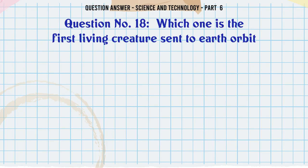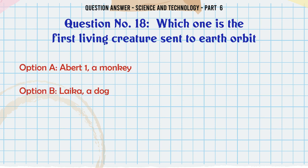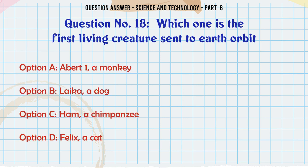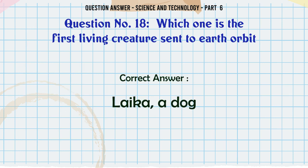Which one is the first living creature sent to space? A. Abate, a monkey. B. Laika, a dog. C. Ham, a chimpanzee. D. Felix, a cat. The correct answer is Laika, a dog.